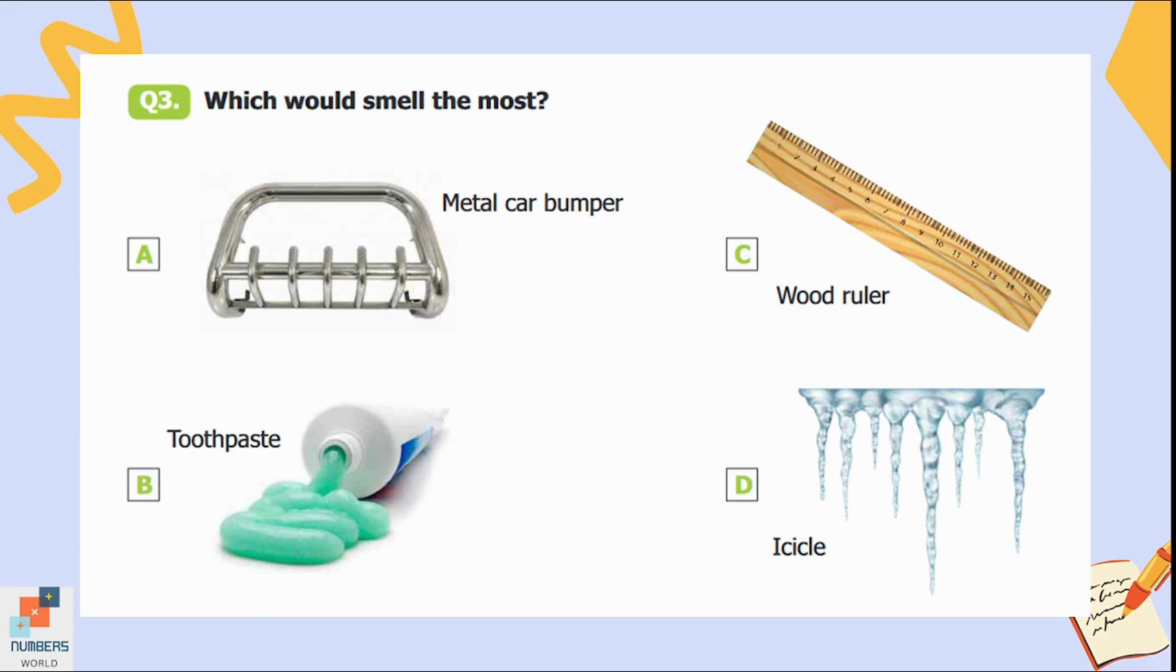Question number three: Which would smell the most? Option A is metal car bumper, B is toothpaste, C is wood ruler, and D is icicle. Toothpaste will smell the most because different flavors are added to make it smell good, so option B is the correct answer.